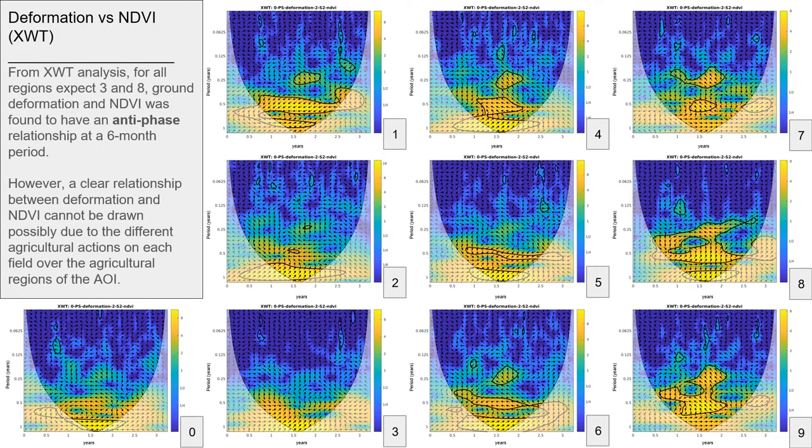Next, deformation and NDVI have an anti-phase relationship for all regions except regions 3 and 8 at a 6-month period. It is important to highlight that results at different time periods are contradictory, possibly due to different agricultural actions at field level.